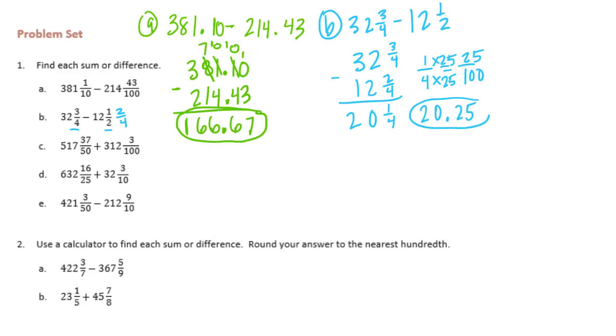Let's do C right here. 517 and 37 fiftieths plus 312 and 3 hundredths. So 3 hundredths is already in hundredths. We need to change 37 fiftieths to hundredths, so times 2 times 2. 37 times 2, let's do that. 7 times 2 is 14, carry the 1. 2 times 3 is 6 plus 1 is 7. So 74 hundredths, which makes it 517 and 74 hundredths plus 312 and 3 hundredths.